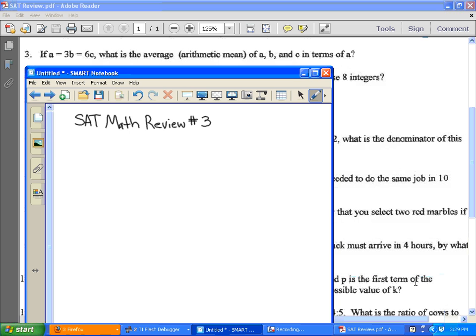Okay. Number 3 on the SAT math review says if A equals 3B, so we know that A is equal to 3B, which is equal to 6C. It says what is the average or the arithmetic mean of A, B, and C in terms of A?